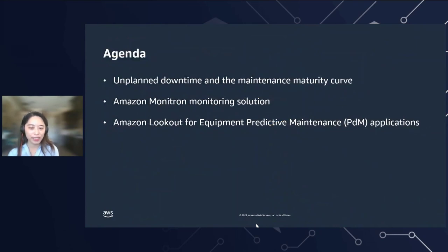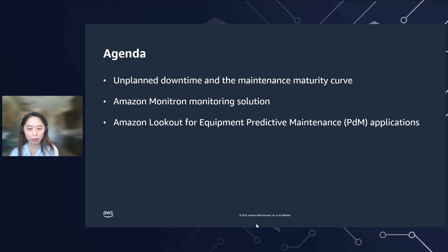In today's agenda, I will cover the following three items. First, illustrate the cost of unplanned downtime in various industries, and how to utilize the maintenance maturity curve to start thinking about where to begin your program. Second, how you can utilize Amazon's monitoring solution to start gathering real-time equipment health information and start making a maintenance program driven by AI service. Third, how Amazon Lookout for Equipment can analyze large amounts of data utilizing advanced machine learning algorithms to unlock predictive maintenance across a wide range of assets.